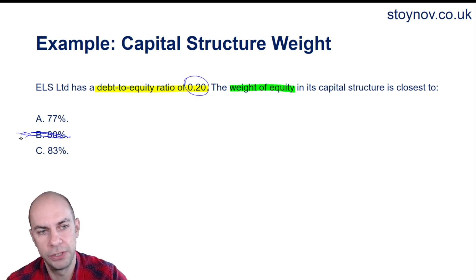So the way we want to think about this question is our debt-to-equity ratio is simply debt over equity. What a shocker there. And that is 0.2, which you can think of as 0.2 divided by 1. Or if you want to think in terms of whole numbers, you can think of it as 2 over 10. That's also 0.2.